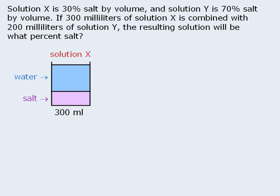For this question, let's say that the bottom part is the salt portion of the mixture and the top part is something other than salt, say water. The question tells us that solution X is 30% salt by volume. So if there is 300 milliliters of solution X and 30% of 300 is 90, then we know that there is 90 milliliters of salt in the solution. This means the remaining 210 milliliters of the solution must be water.